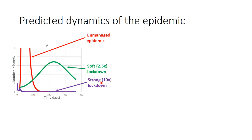With a strong lockdown, like China's, the epidemic starts to increase but then dies down — killed by the strong lockdown measures — and remains so for over a year. With an intermediate soft lockdown, the epidemic won't increase as strongly but will still increase, only dying down much later. This takes about 200 days — about half a year — before the epidemic starts to die down. That is a lockdown where social activities are reduced by a factor of two and a half.